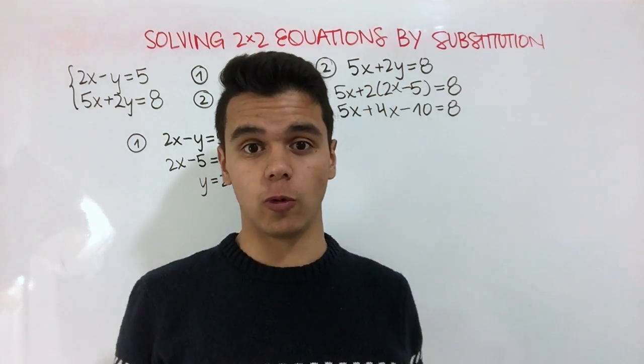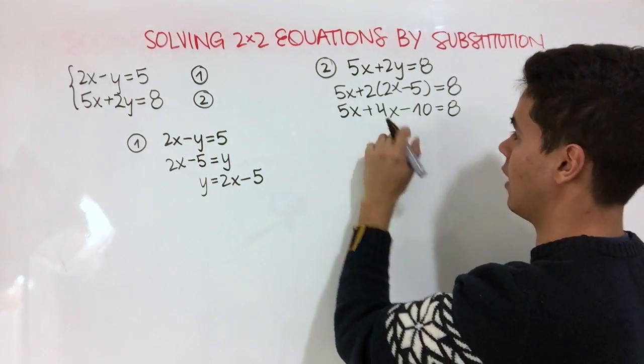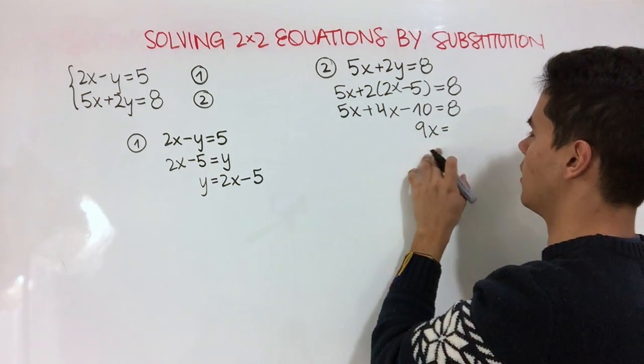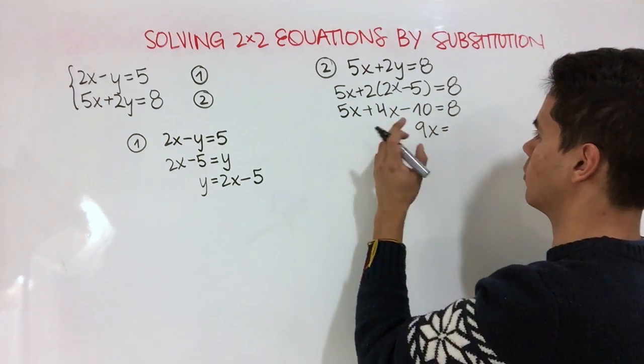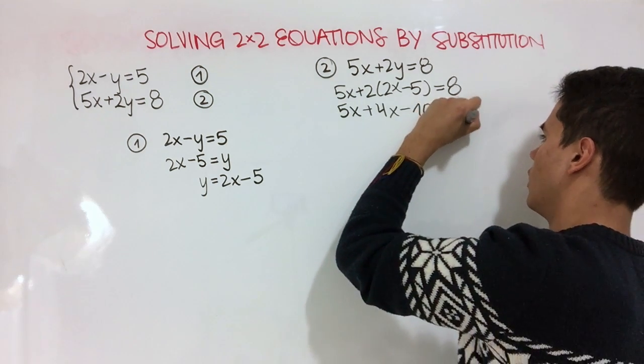Now that we just have one variable, which is x, we're going to solve for that variable. So 5x plus 4x is equal to 9x. And we're going to add 10 on both sides of the equation. So this term will become 0, and we're going to add 10 here. So we end up with 18.